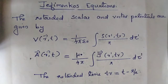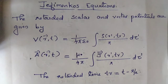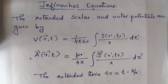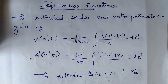Jefimenko's equations. The retarded scalar and vector potentials are given by V of r equal to 1 by 4 pi epsilon 0, integral of rho of r' at retarded time tr, divided by r, d-tau prime. And A of r equal to mu0 by 4 pi, integral of J of r' at tr, divided by r, d-tau prime. The retarded time tr is equal to t minus r by c.